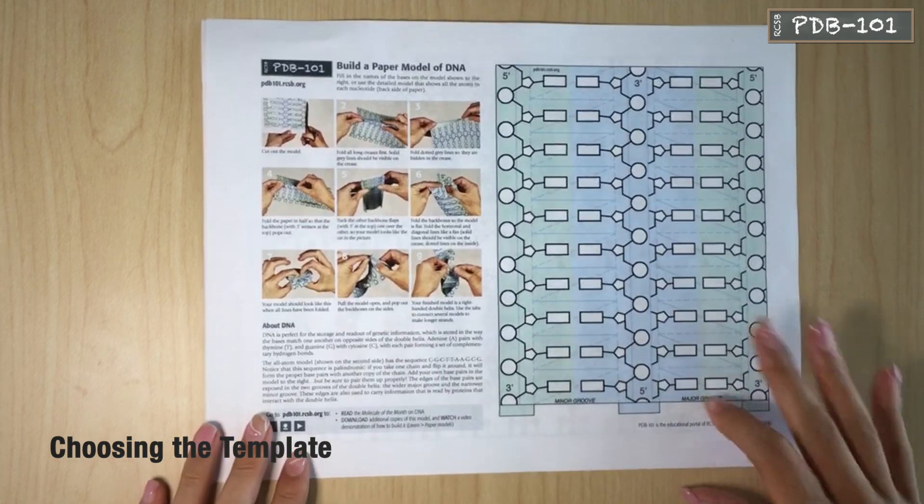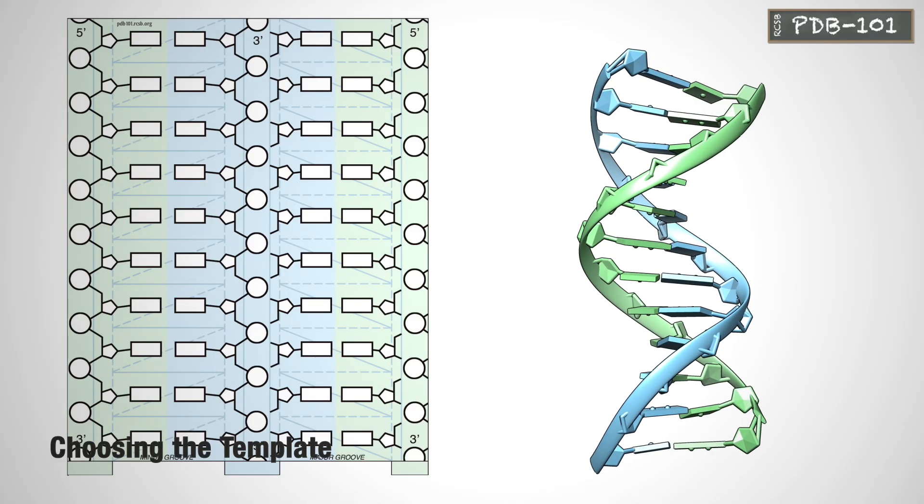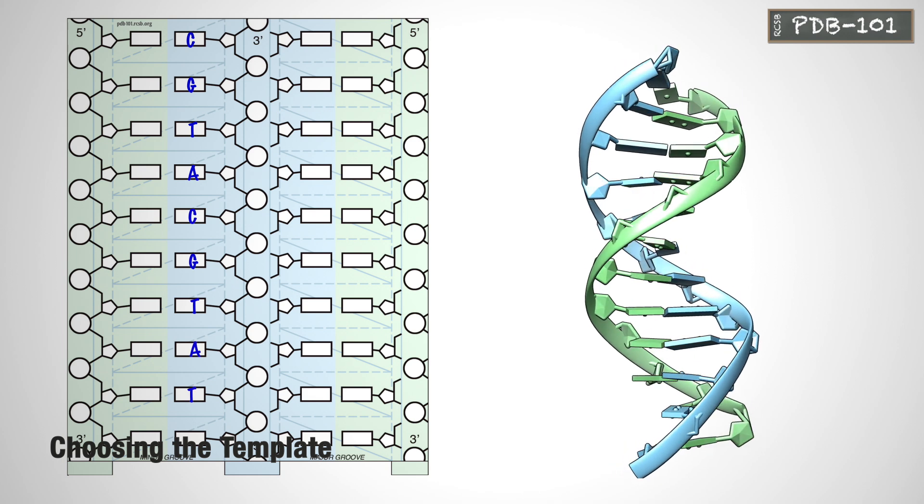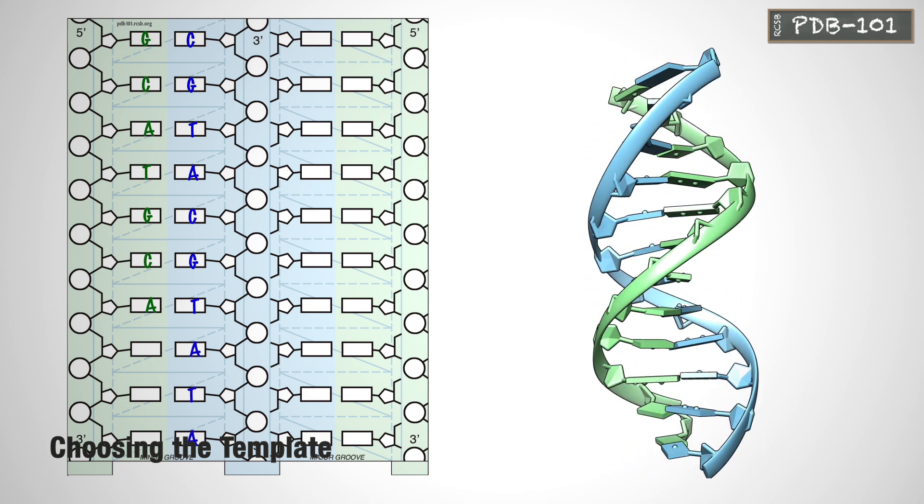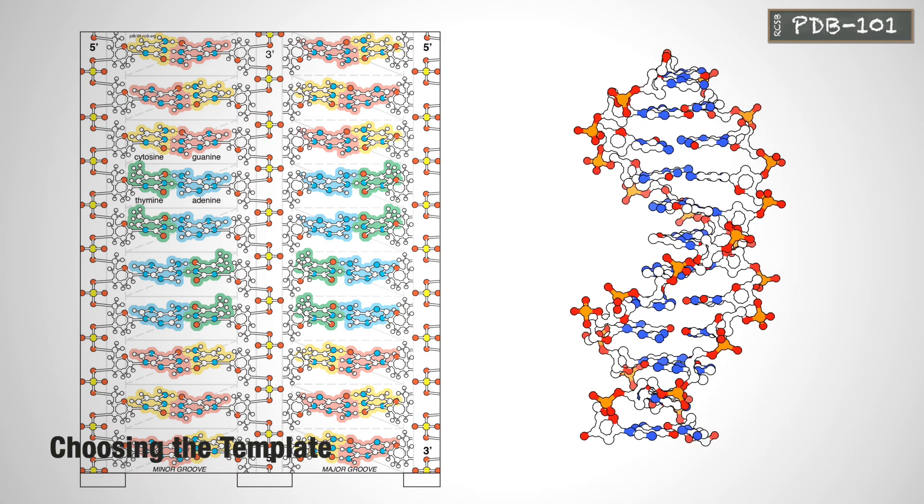Upon printing the DNA folding template, you will notice that it contains two types of models. In this model, you can add your own base pairs, but be sure to pair them up properly. This detailed model shows all the atoms in each nucleotide.